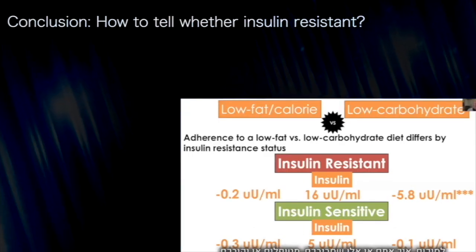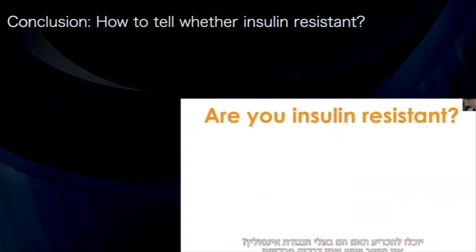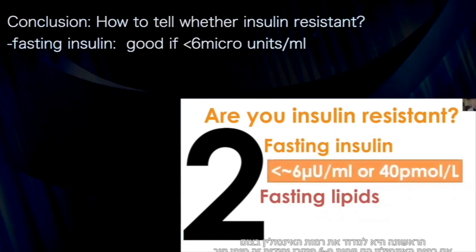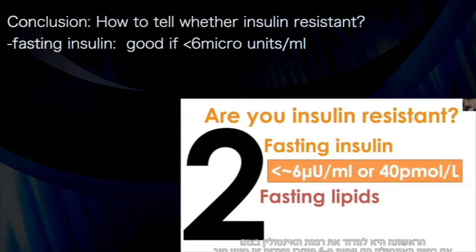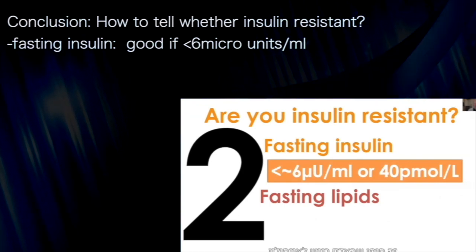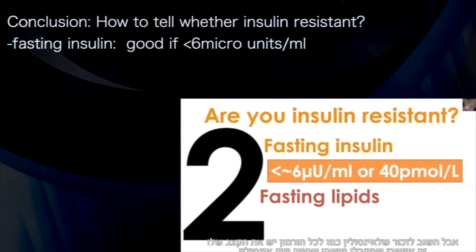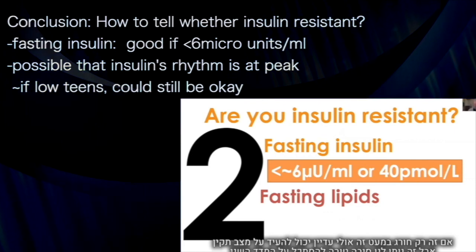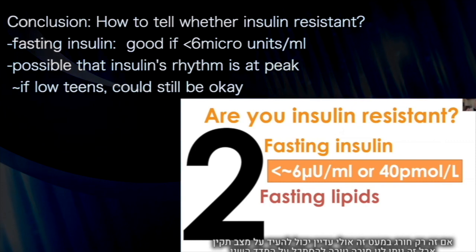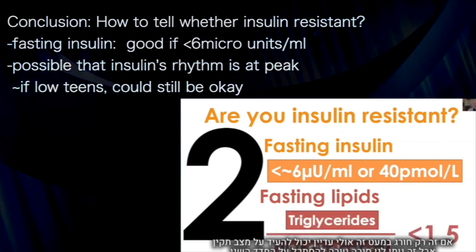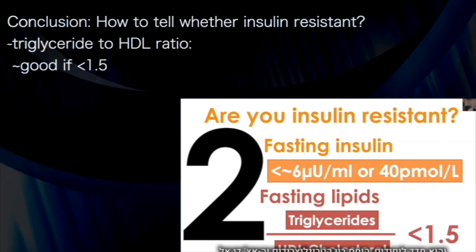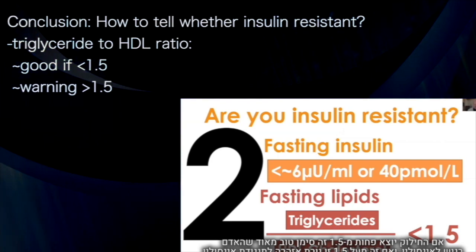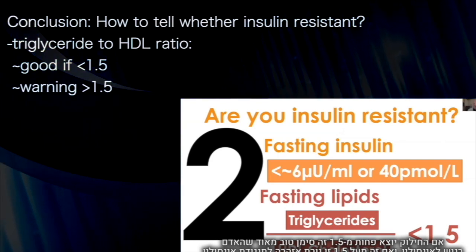In conclusion, how might you determine whether you are insulin-resistant? There are two strategies. First, look at your fasting insulin. If fasting insulin is less than six micro-units per milliliter — or less than around 40 picomoles — that's a good sign of insulin sensitivity. However, insulin has its own rhythm, so it's possible to catch someone at a peak in the low teens, which could still be okay. The second measurement is fasting lipids: the triglyceride to HDL ratio. If that ratio is less than 1.5, that's a very good sign the person is insulin-sensitive. If it's higher than 1.5, that's a warning they likely are insulin-resistant.